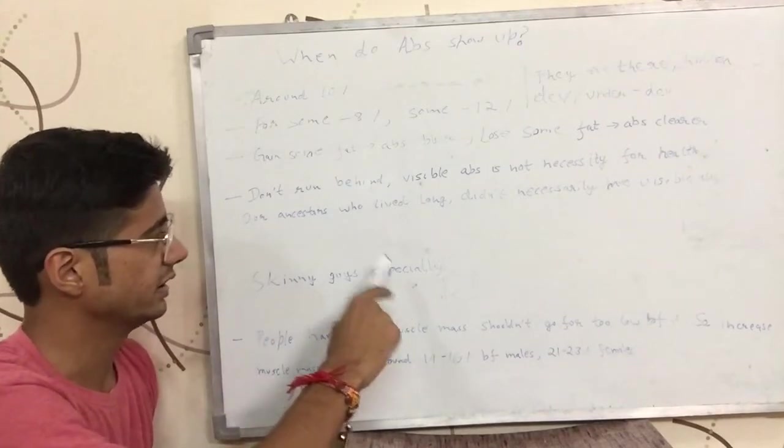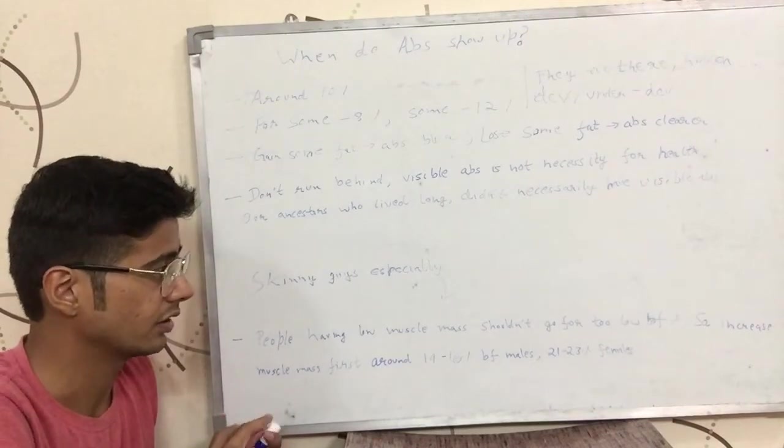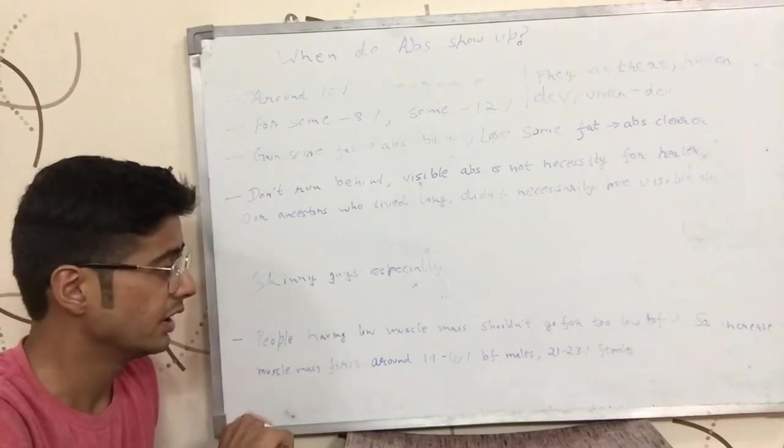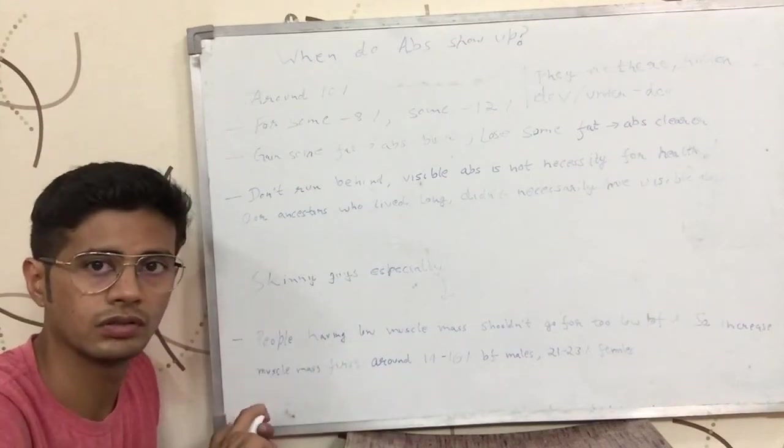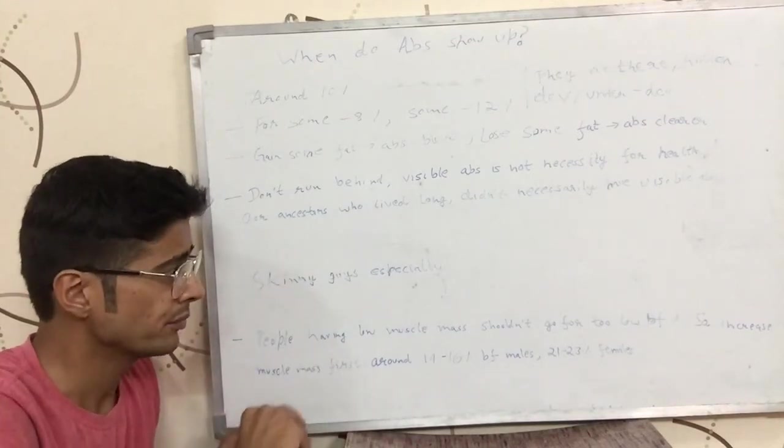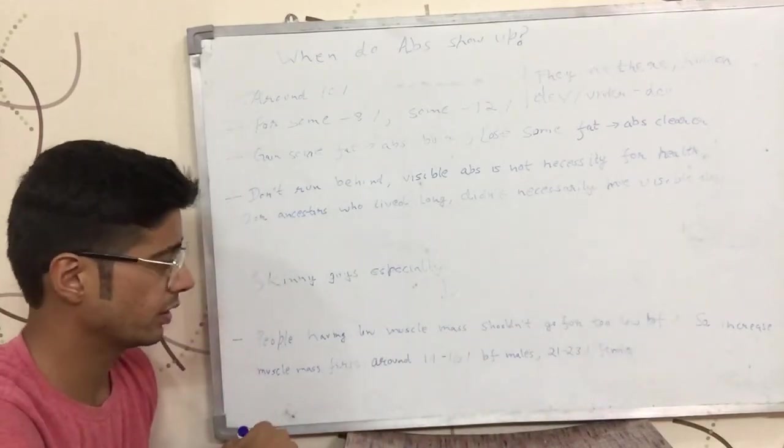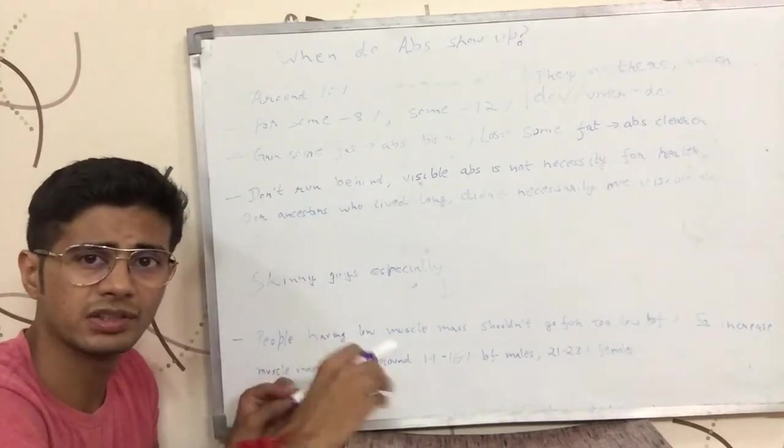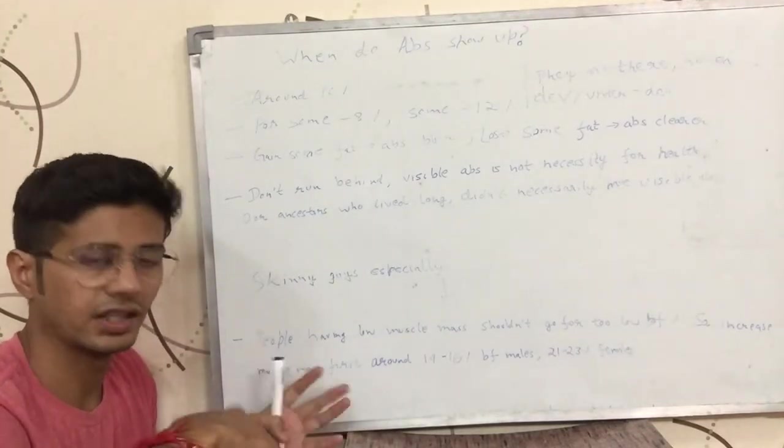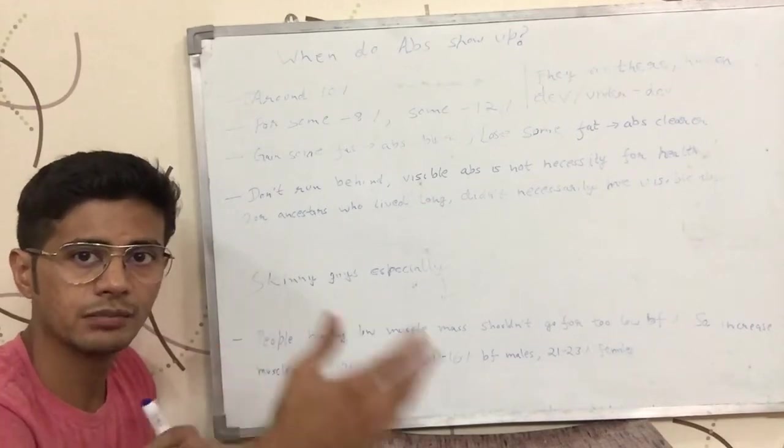Skinny guys especially, the guys who have low muscle mass, they should not run behind abs. They should first try to gain muscle mass. Then they should try to get their abs visible. So they should not go for too low body fat percentage. What they should do is they should come around 14, 15 or 16 percent body fat. And if they are obese, they should come around this body fat and then gain muscle.